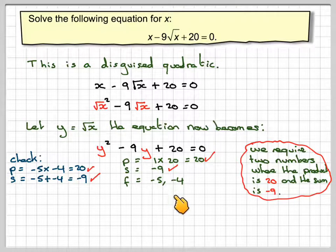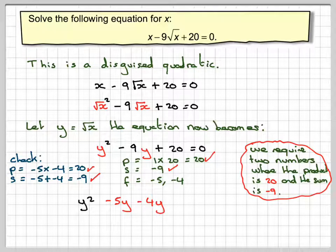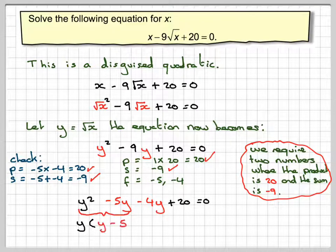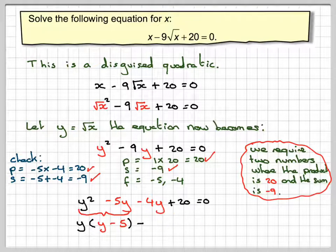It doesn't matter which way round I write these two. So we take our quadratic. We've got y squared. We split the middle term up to minus 5y minus 4y plus 20 is equal to 0. We group these two together here. So we get that y is bracket y minus 5. Bring down the minus sign.